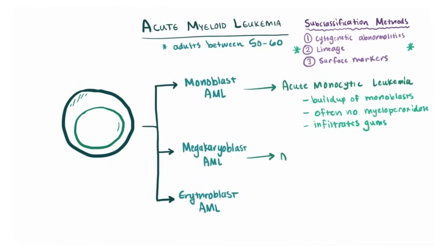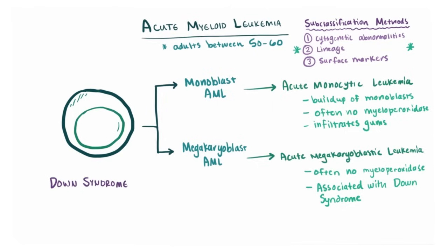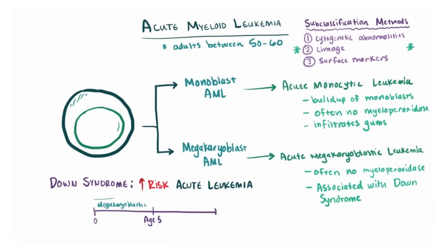Another important subtype is megakaryoblastic leukemia — a buildup of megakaryoblasts. Like monoblasts, these don't have myeloperoxidase either, but there is an association with Down syndrome before the age of five. In general, patients with Down syndrome have an increased risk of acute leukemia: usually acute megakaryoblastic leukemia when it's before the age of five, and ALL after the age of five.